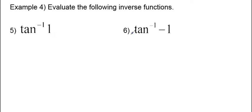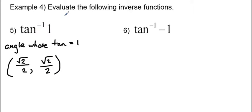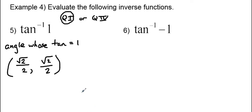We have the inverse tangent of 1 and the inverse tangent of negative 1. For arctan(1), we're looking for the angle whose tangent equals 1. That only occurs when both the x and y coordinates are the same, which happens at radical 2 over 2, radical 2 over 2. Since this is positive, we're in quadrant 1. Checking the unit circle, that happens at 45 degrees or pi over 4.